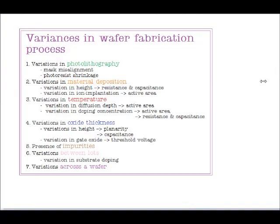Now let's look at what the variances in the wafer fabrication process are. There could be variations in photolithography — for example, mask misalignment or photoresist shrink after a pre-bake. Then there are variations in material deposition: when you deposit a layer of polysilicon, the thickness may not be uniform, which could result in changes in resistance or capacitance.